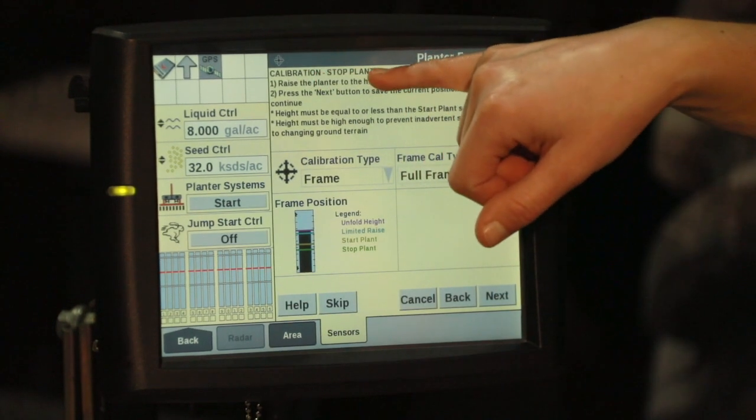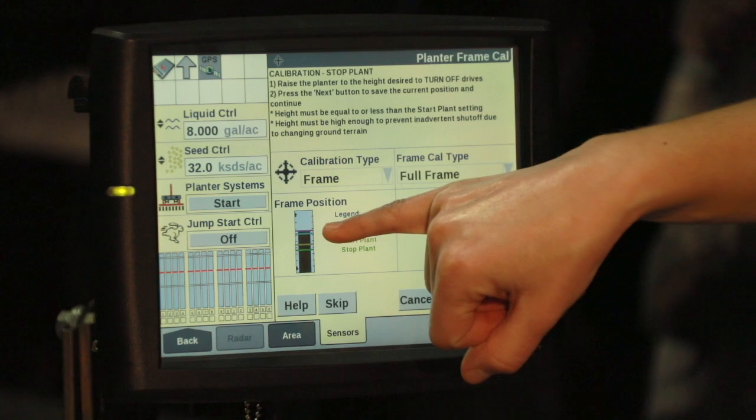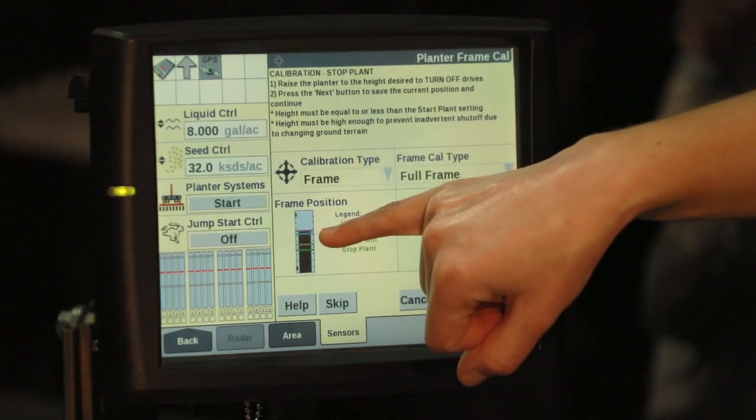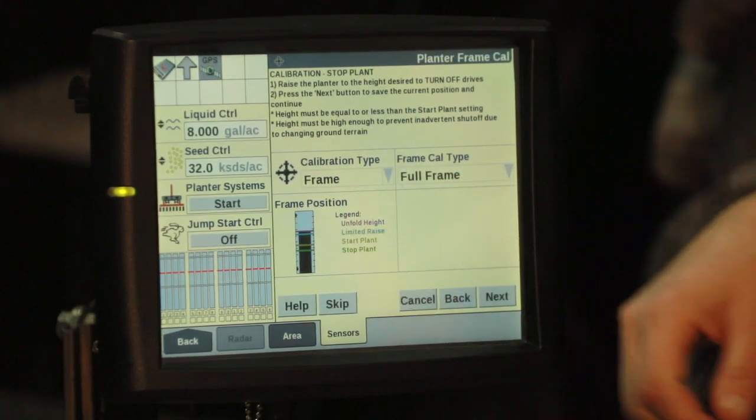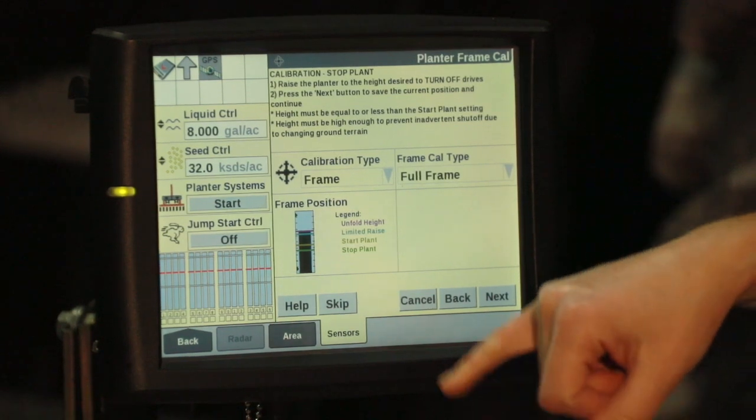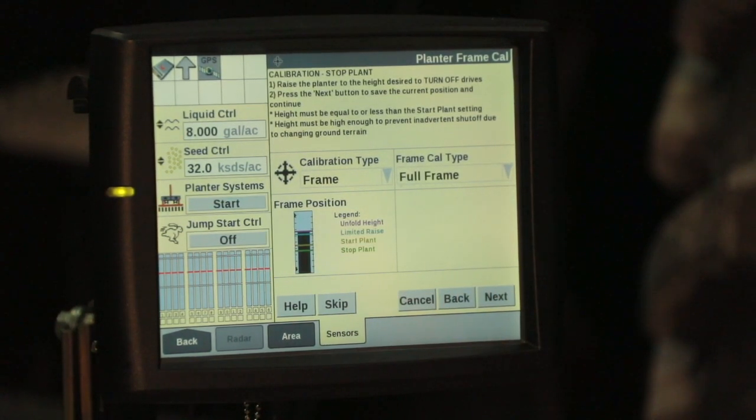Now we are going to calibrate the stop plant height. We can see that our frame height is currently raised all the way up to our unfold height, so we are going to lower that toolbar to the point that we want our row units to stop planting.